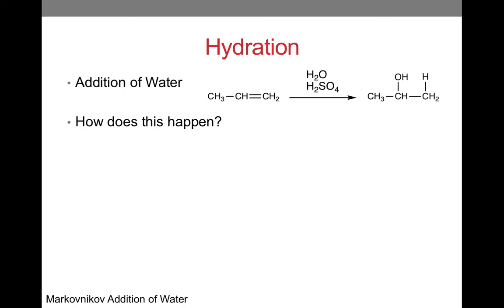The first reaction we will look at is hydration of an alkene, which is the addition of water. As this reaction shows, we need an acid catalyst, such as sulfuric acid, for the reaction to proceed. Note that this reaction follows Markovnikov's rule. Any time we ask how or why a reaction happens, we think about the mechanism. Let us now begin the mechanism.